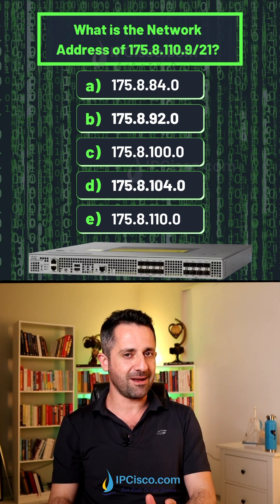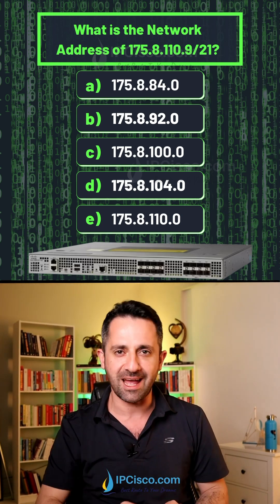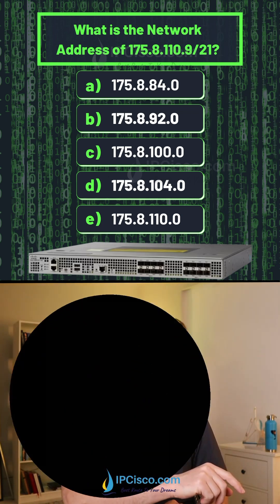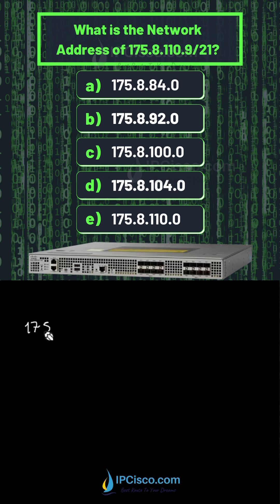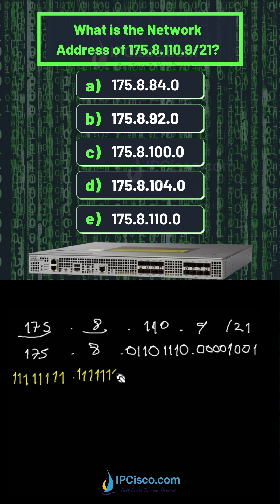It's a piece of cake, guys. So let's focus on the question and finish it. First, I will write the IP address in binary format, but I will not do this for these two octets because it is not necessary for this question. After that, I will write the subnet mask in binary format.